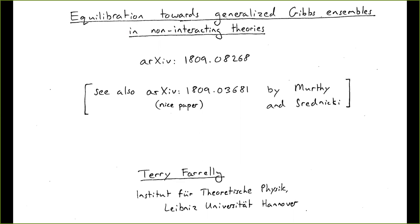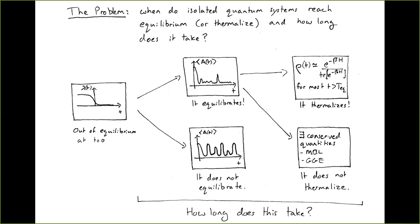Feel free to ask questions and interrupt at any time — the audio quality seems good. The basic problem being examined is: when do isolated quantum systems reach equilibrium, or even better, when do they thermalize, and how long does this process take?